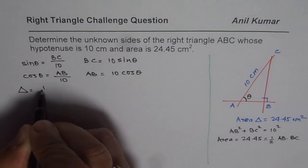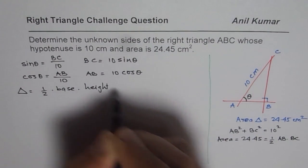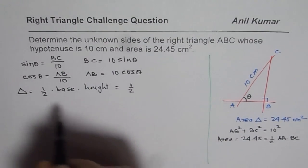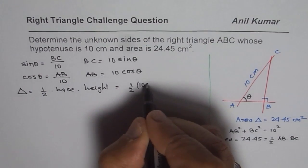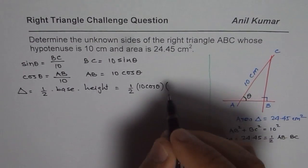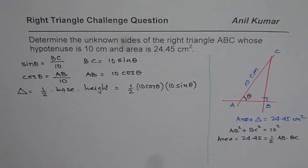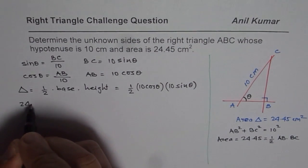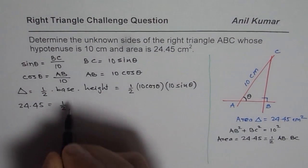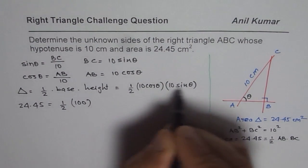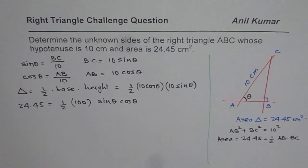Now, area of the triangle is half base times height. So in this right triangle, half of base, base is AB for us. So we will write 10 cosine theta. So 10 cos theta. And the height is BC. So we can write 10 sin theta, correct? Area is given to us as 24.45. That should be equal to half times 10 times 10 is 100. So let me write 100. And then we have sin theta, cos theta. Correct.